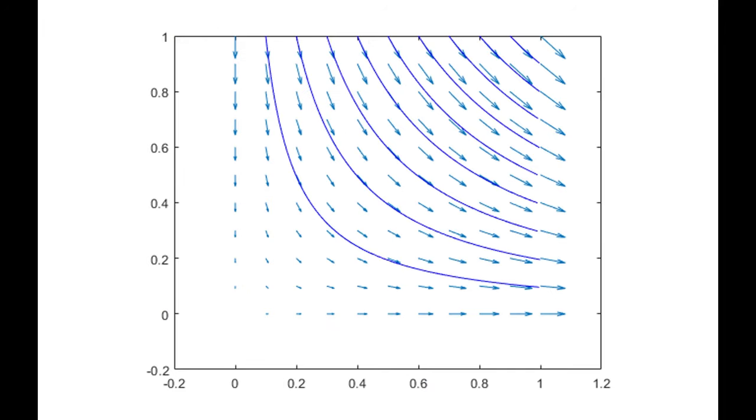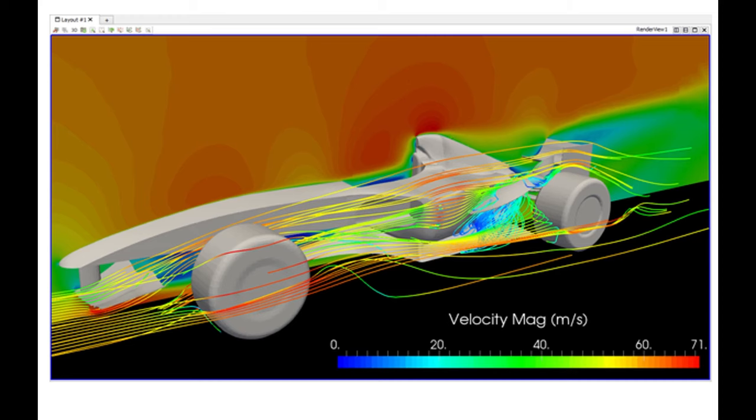or if you were looking at, say, flow around a body, that would be the velocity profile, how the air or water is actually moving. That's a streamline.